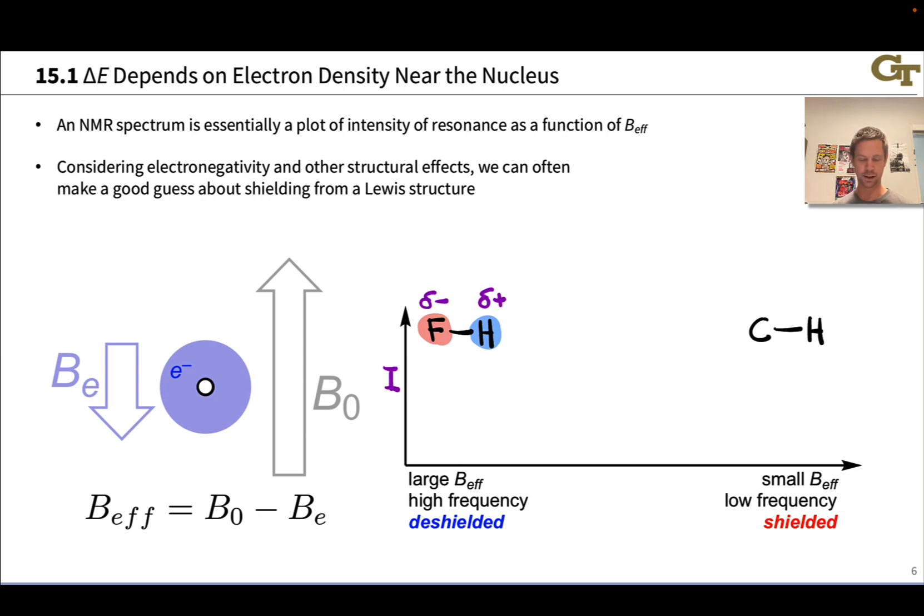The broader lesson here is that if we consider things like electronegativity and other structural effects related to electron density, we can often make a good guess about shielding and where along the x-axis a particular hydrogen should appear based on a Lewis structure—for example, the Lewis structure of a particular functional group. CH in alkanes, CH in alkenes, CH in alkynes show up at different frequencies. OH and NH show up at different frequencies. A lot of this boils down to electronegativity and considerations of electron density around the hydrogens in these functional groups.